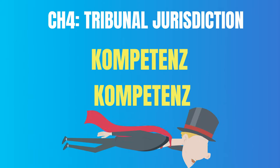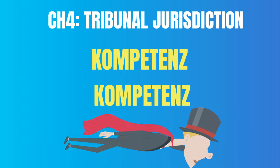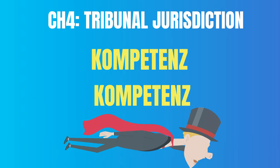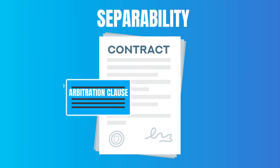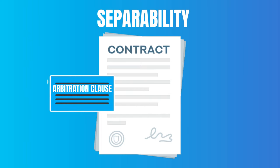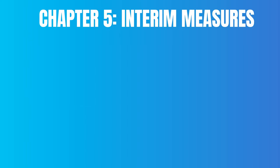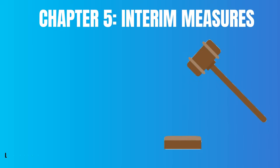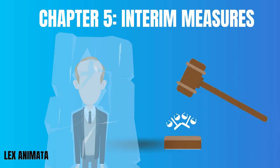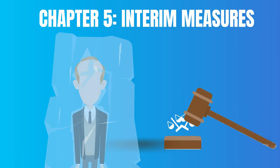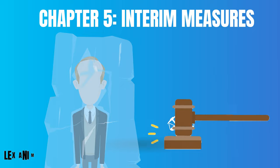Chapter 4 discusses the tribunal's jurisdiction and competence to decide on its own jurisdiction, as well as the separability of the arbitration clause from the mother contract. Chapter 5 addresses the tribunal's and court's authority to order temporary measures to maintain the status quo till a final award is made.